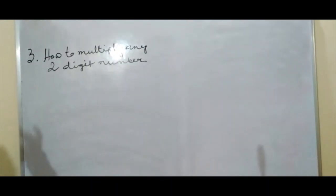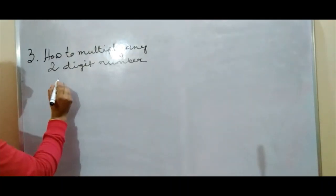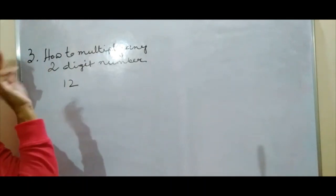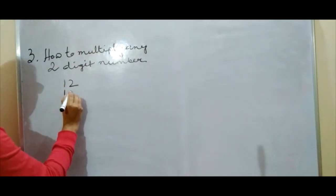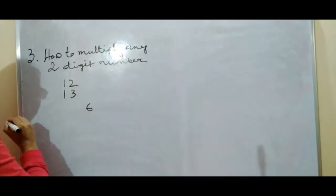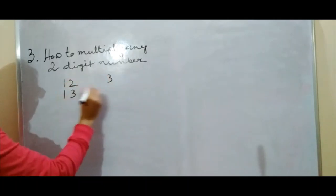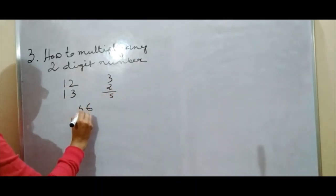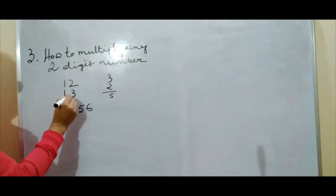Trick number 3: how to multiply any 2-digit number. Since we used 12 × 13 in the first trick, let me show you this one. 12 × 13: first multiply the units digits — 3 × 2 = 6, that is the units place. Then cross multiply: 3 × 1 = 3 and 2 × 1 = 2, so the middle digit is 3 + 2 = 5. Then multiply the tens digits: 1 × 1 = 1. Answer is 156.